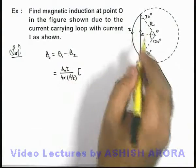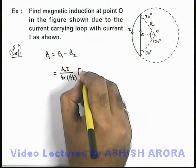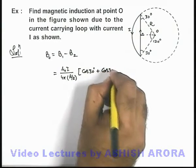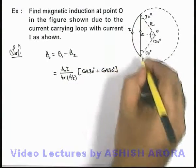Multiplied by 2, multiplied by cos α plus cos β, so it will be cos 30 degrees plus cos 30 degrees. That is the magnetic induction due to the straight wire.